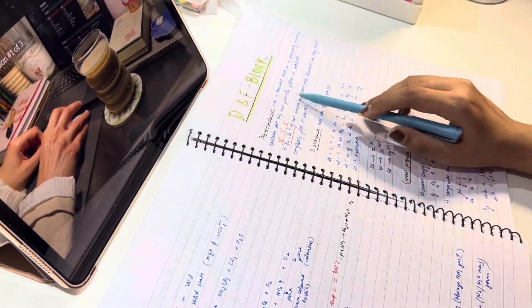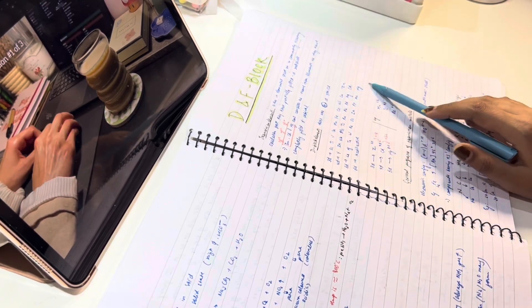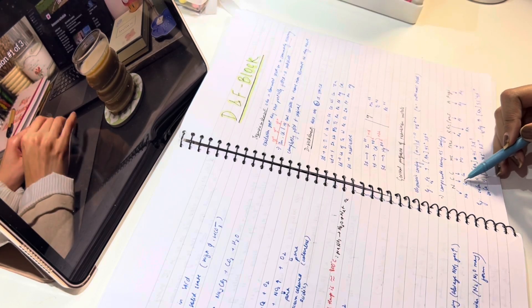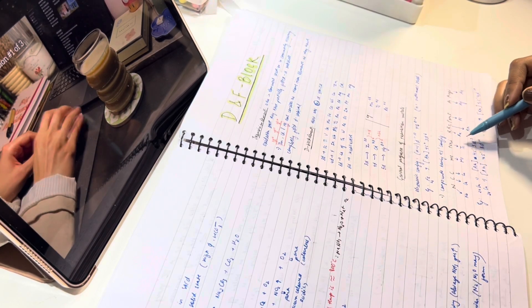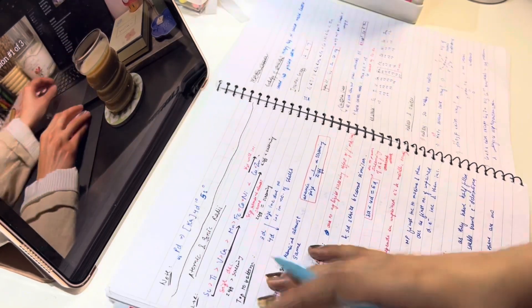Then, without wasting any time, we are starting with D and F block. In coordination compound, it took me around 3-4 hours to do a long-term chapter alone. That's why I don't like it because it's so big. And yes, that's why.